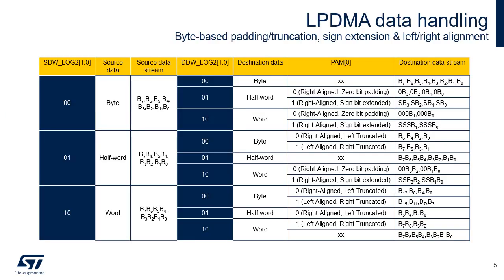The user can configure the data handling between a data transferred from the source to the destination. The table lists all possible data handling from the source to the destination. If the destination data width is equal to the source data width, the source data is copied as is and transferred to the destination. Otherwise, it depends on the padding and alignment mode control bits.